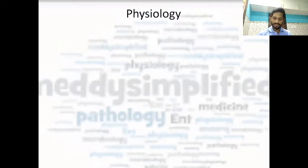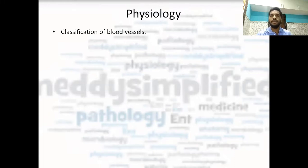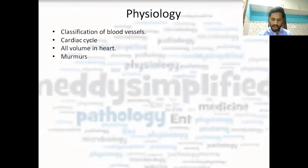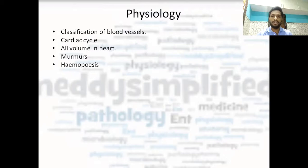Now about physiology. The classification of blood vessels — arteries, arterioles, veins, venules, etc. — they have different names and are classified accordingly; that classification is very important. Then the cardiac cycle: all the volumes in the heart — stroke volume, end-diastolic volume — all these CVS volumes are important. After that, murmurs are very important. You can learn murmurs in medicine also, but it is taught in physiology too, so murmurs should be learned from physiology itself, because many people tend to leave the medicine subject.